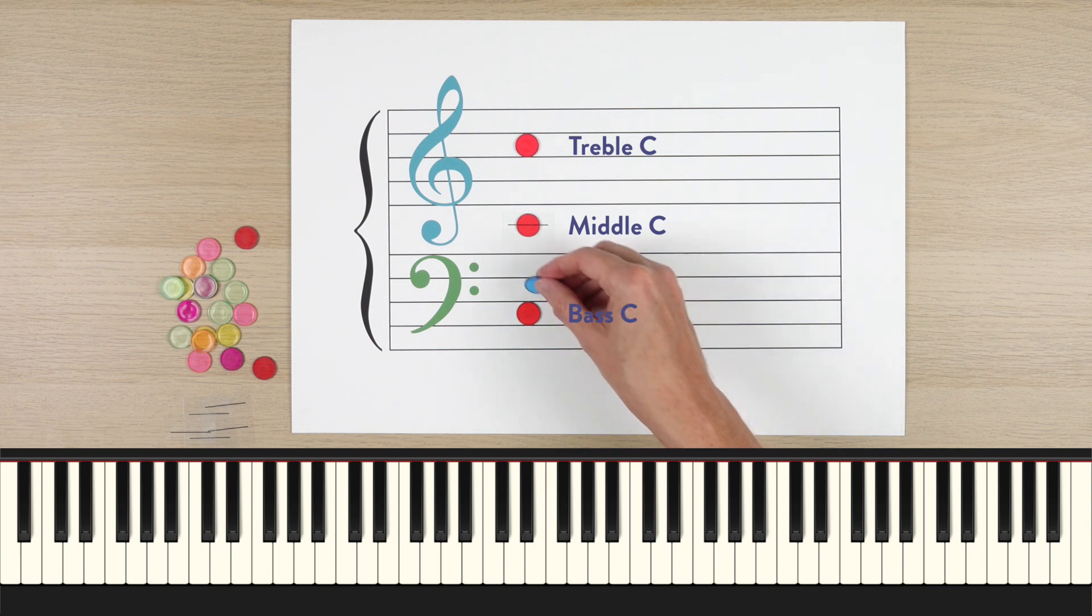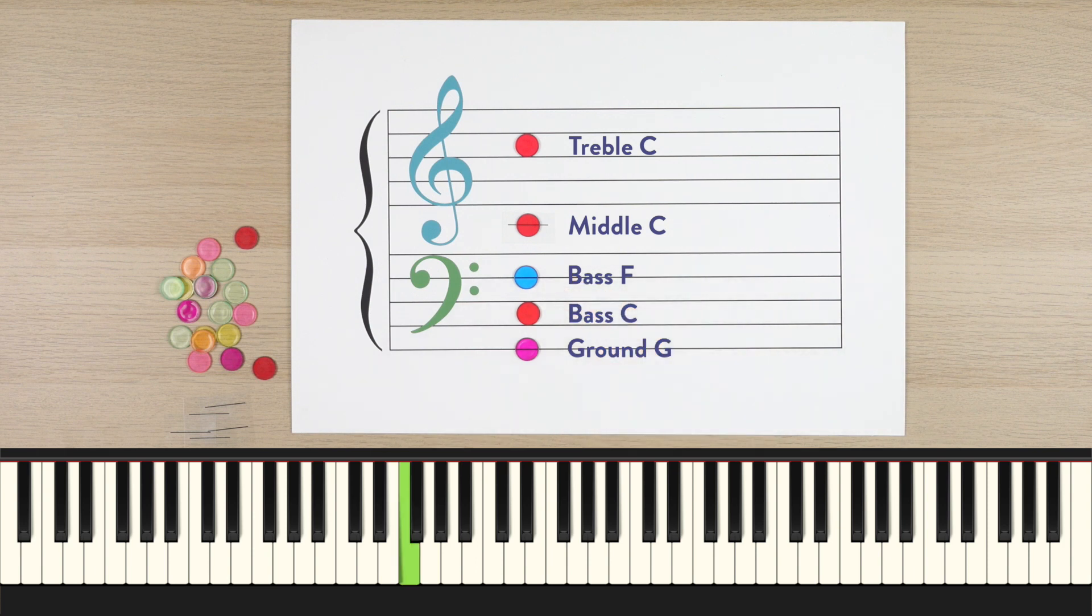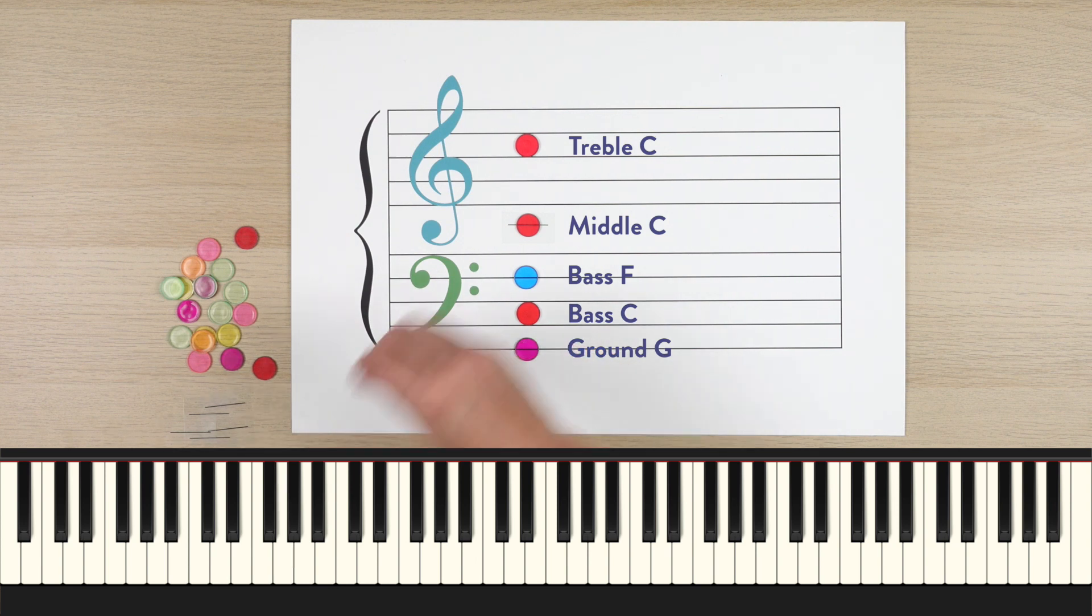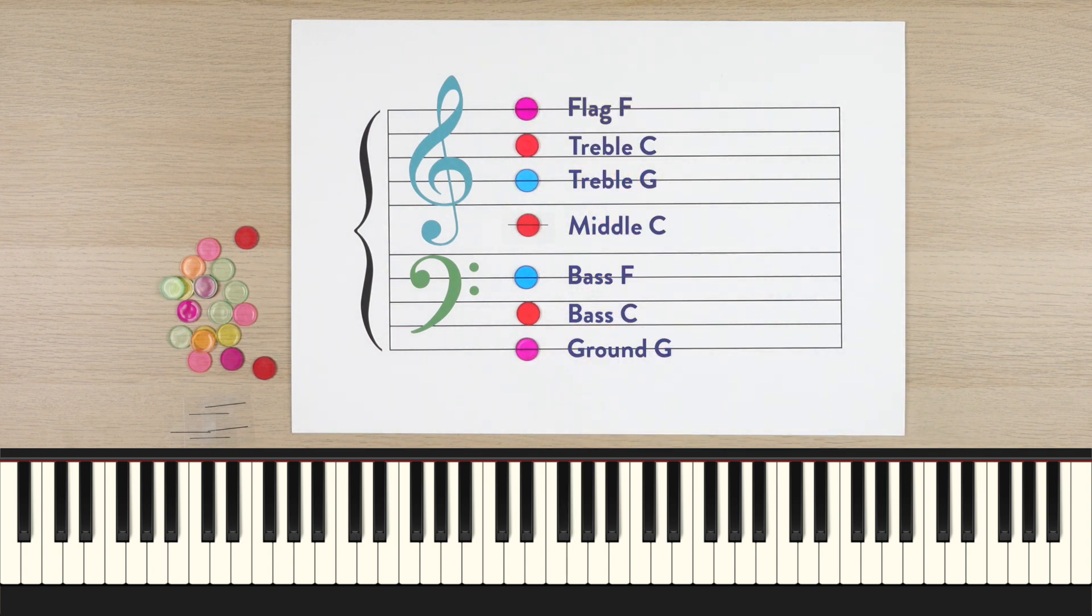Now we have a couple other guide notes in the bass staff between the two lines, bass F, and the bottom line I call ground G. Let's find those on your piano. Bass F is the nearest F below middle C, and ground G way down here. Then we also have treble G right here, and flag F way up here.